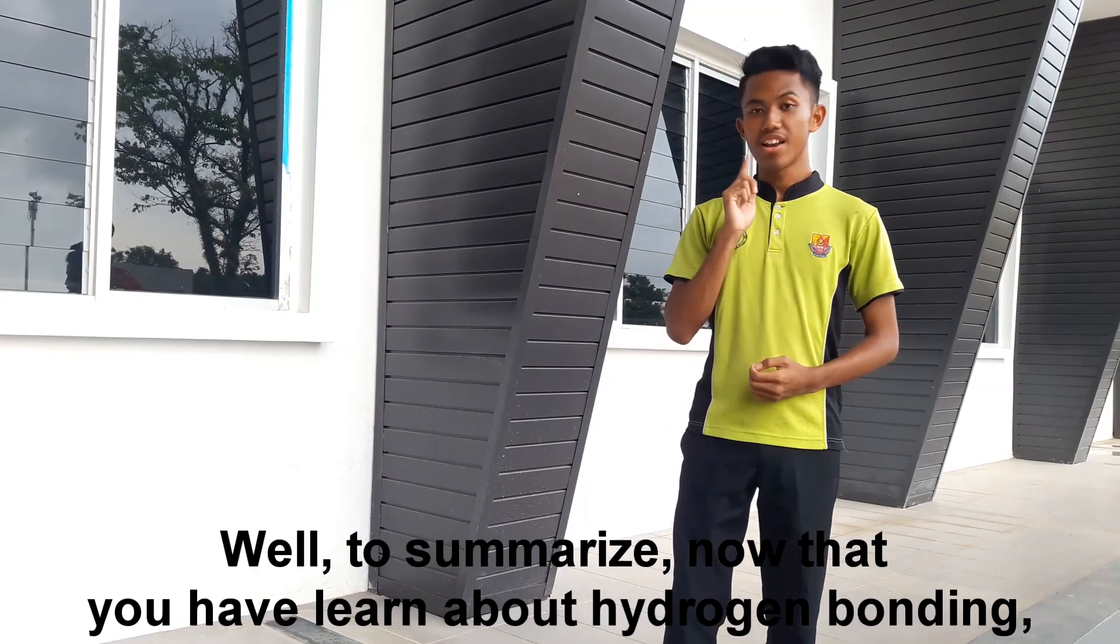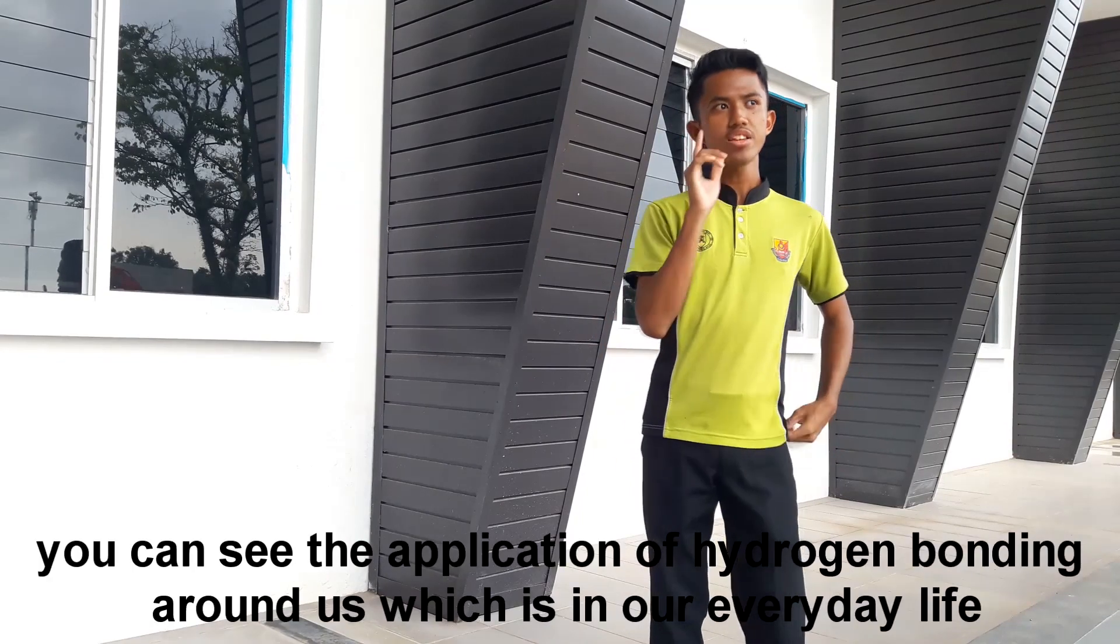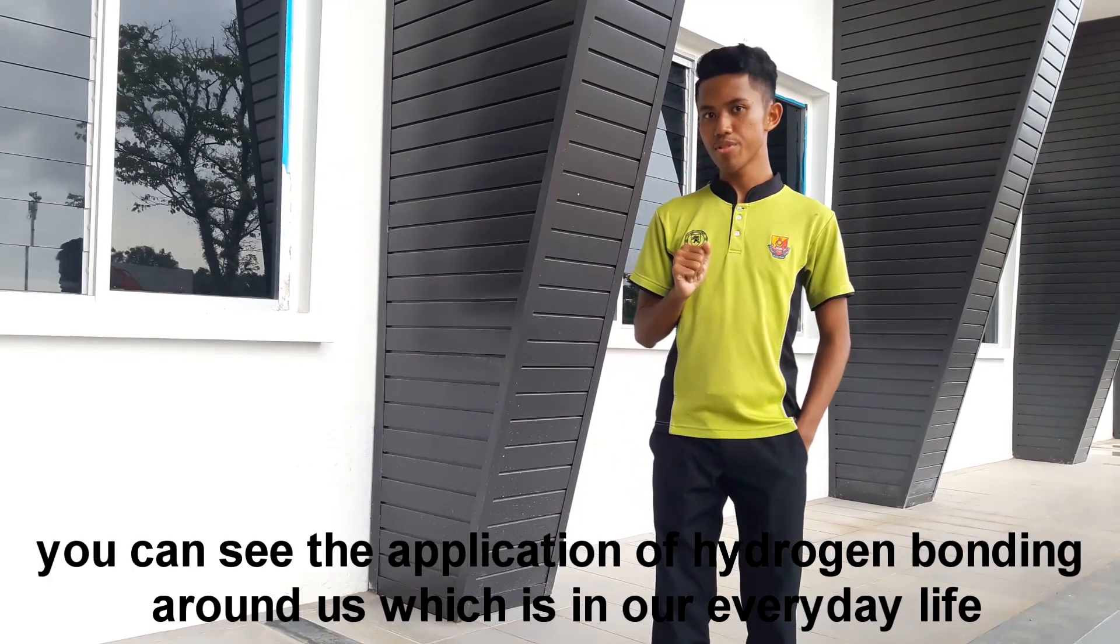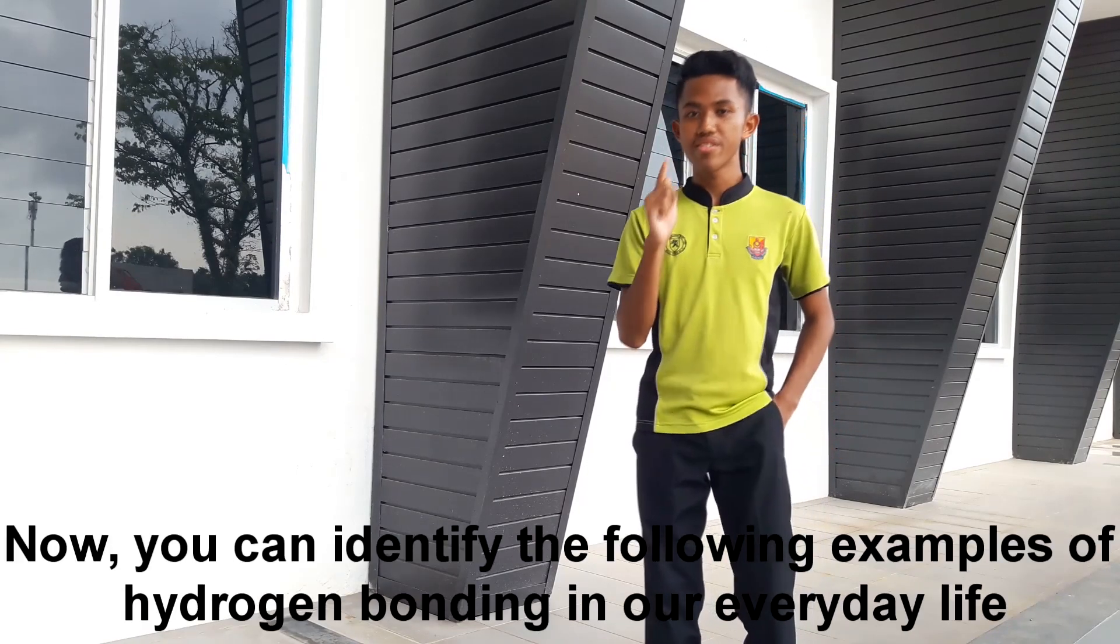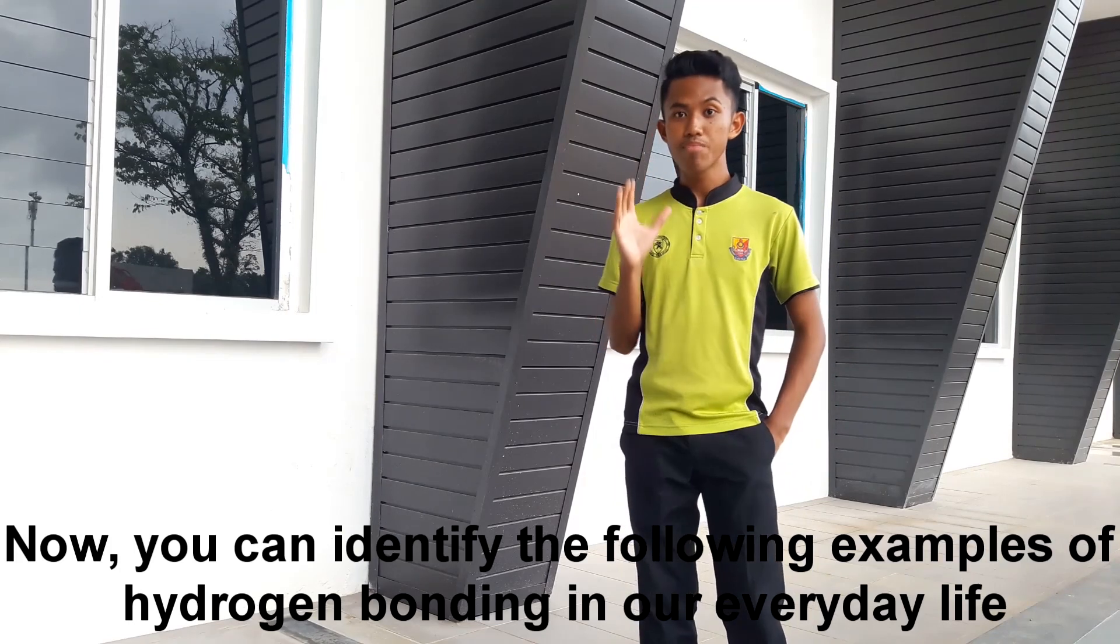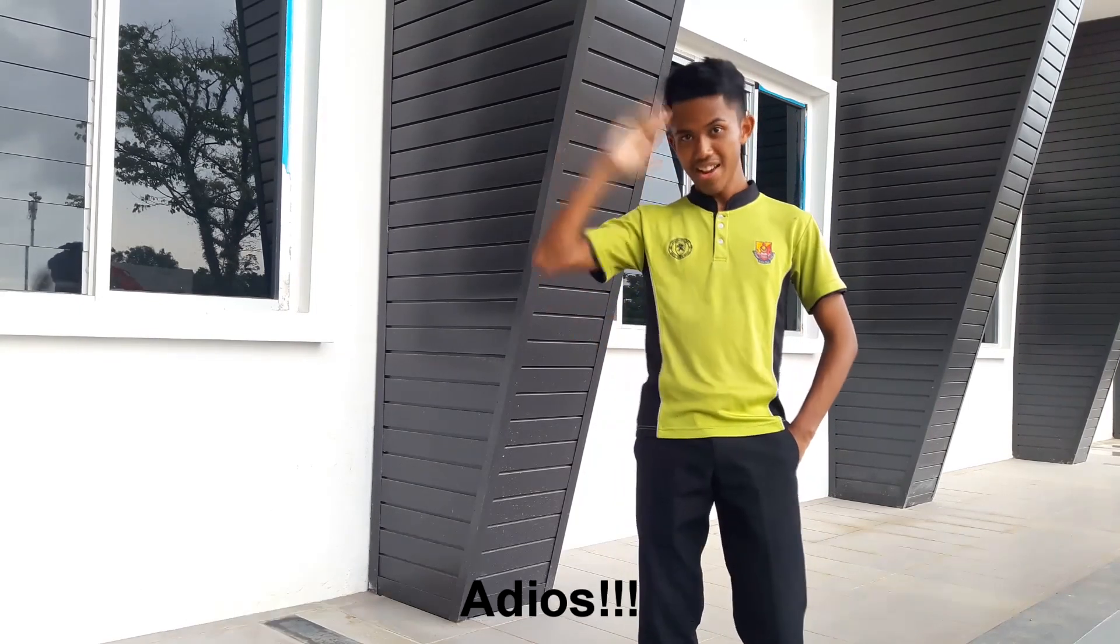Well, to summarize, now that you have learned about hydrogen bonding, you can see the application of hydrogen bonding around us which is in our everyday life. Now, you can identify the following examples of hydrogen bonding in our everyday life. Adios!